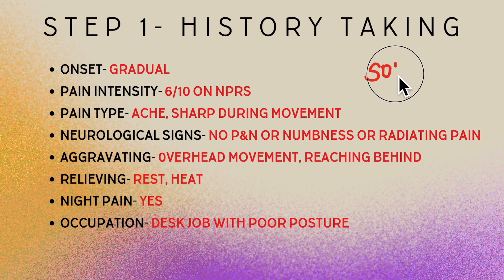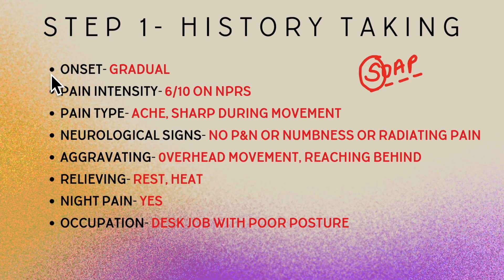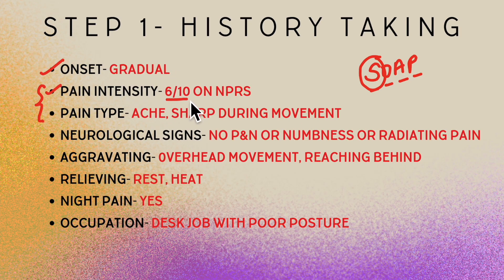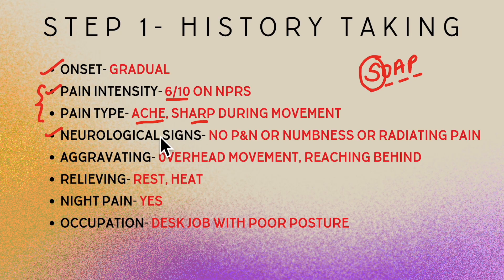We're looking at a SOAP format — subjective, objective, assessment, plan. Under the subjective part, we look at history taking: onset was gradual with no particular mechanism of injury. Pain intensity was about 6 out of 10 on the numerical pain rating scale. The pain type was an ache and sharp during movement. To exclude neurological involvement, we ask about pins and needles, numbness, or radiating pain — which he didn't have.